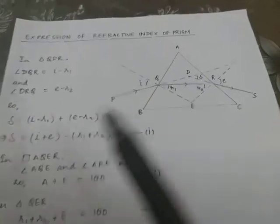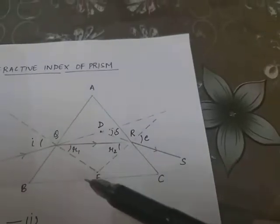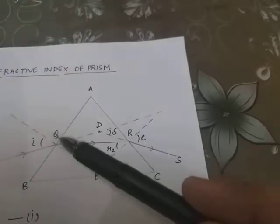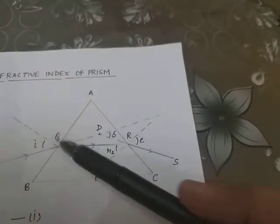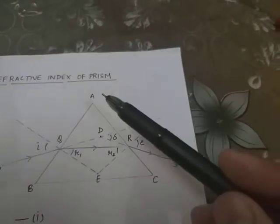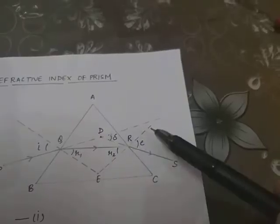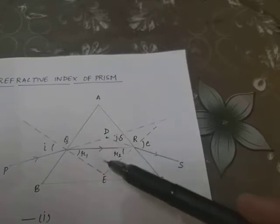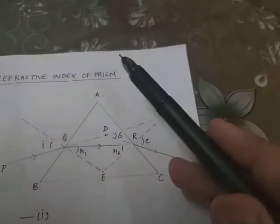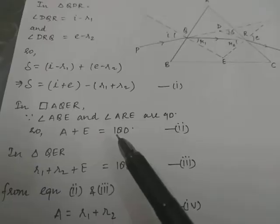In quadrilateral AQER, angle AQE is 90 degrees because QE is the normal, and angle ARE is also 90 degrees because RE is also a normal. Since two angles of the quadrilateral are each 90 degrees, the sum of the remaining two angles must equal 180 degrees. Therefore, angle A plus angle E equals 180 degrees. This is equation number two.